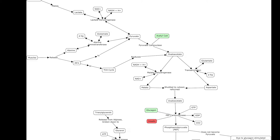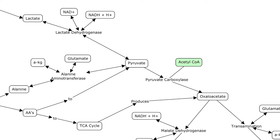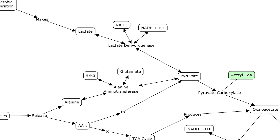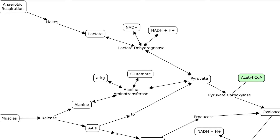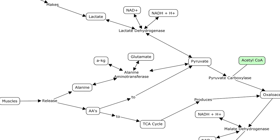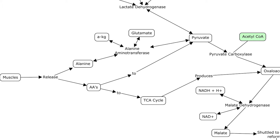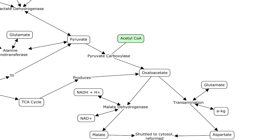Let's look at pyruvate first, because this is going to be our first main substrate. We get it a few different ways. From anaerobic respiration we get lactate, and then lactate is going to be acted on by lactate dehydrogenase — it's going to be oxidized to form pyruvate. Another way is the muscles can release alanine or other amino acids. Alanine can be acted on by alanine aminotransferase to be converted to pyruvate; in the process we'll have alpha-ketoglutarate going to glutamate. The arrows going both ways show that the reaction can go in both directions. The amino acids can also be converted to pyruvate, or they can go into the TCA cycle to produce oxaloacetate.